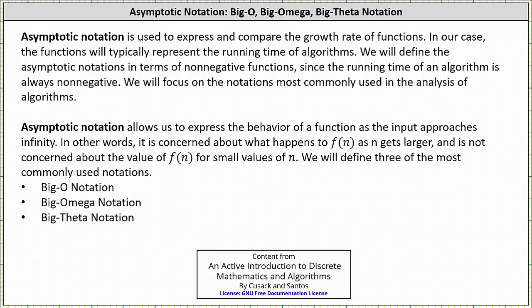Welcome to an introduction to Big-O notation. Asymptotic notation is used to express and compare the growth rate of functions. In our case, the functions will typically represent the running times of algorithms.